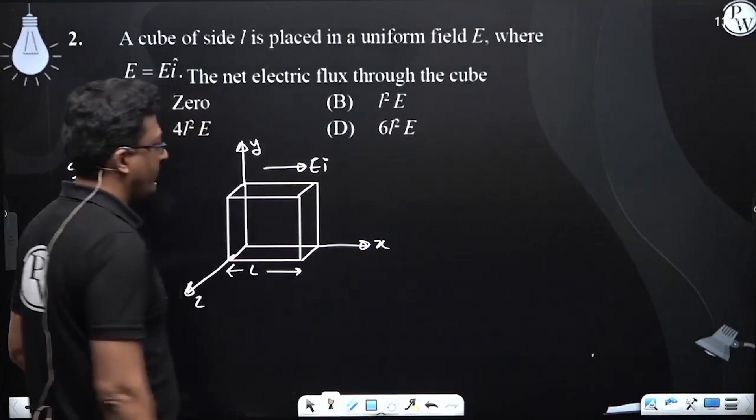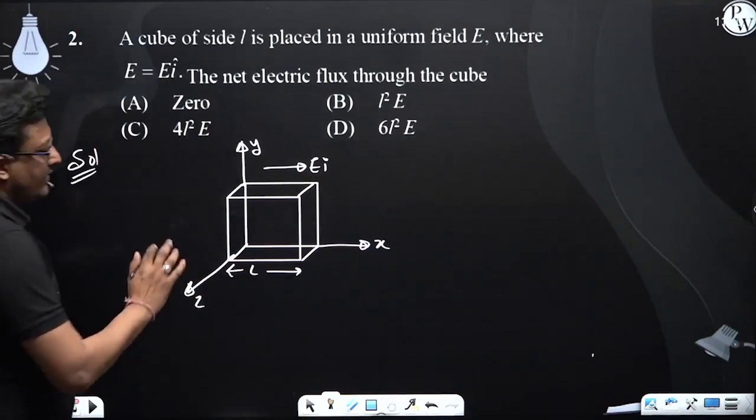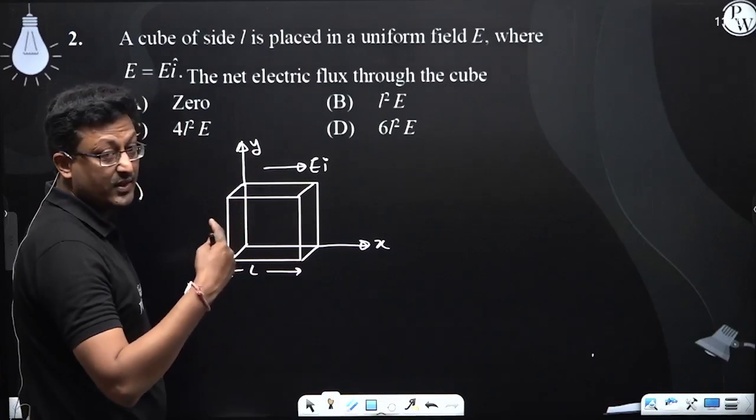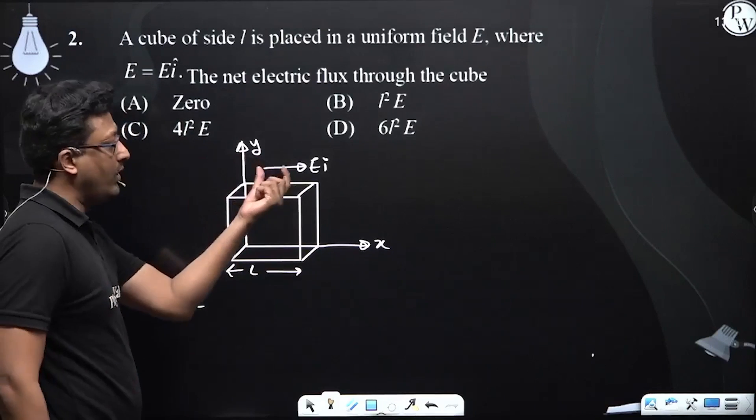This is the direction of the electric field. Now see, only there are two surfaces which will contribute in flux. The rest of the surfaces will always be perpendicular to the electric field.